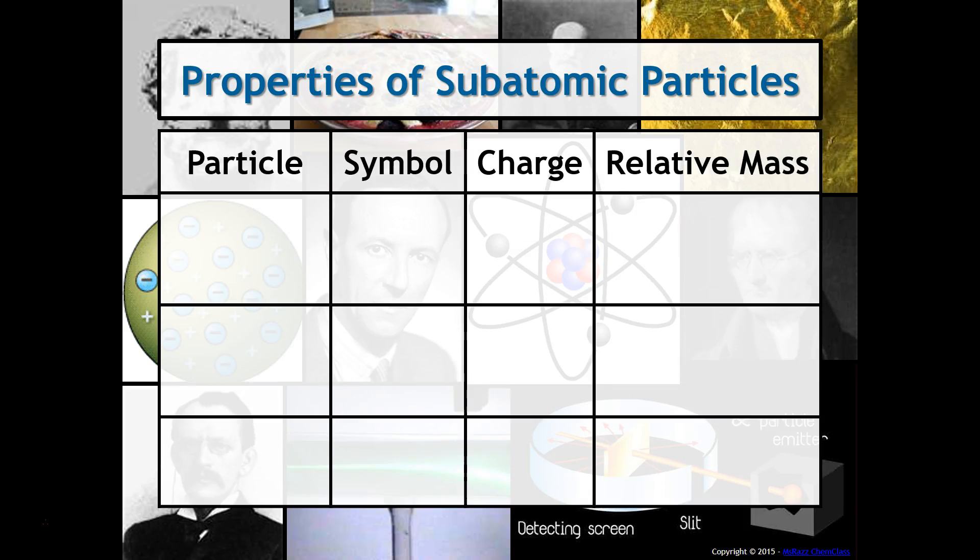Let's get down to the nitty-gritty, some of the properties of these subatomic particles. For the proton, it has the symbol P+, the charge is 1+, and the relative mass is 1.